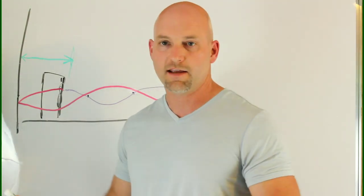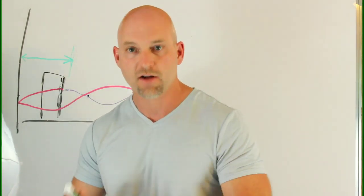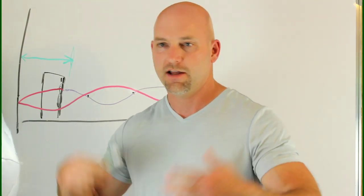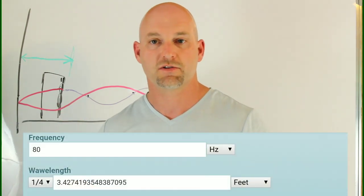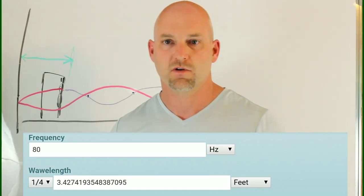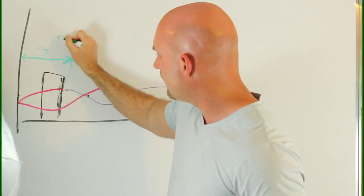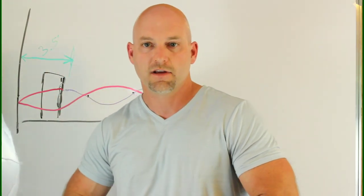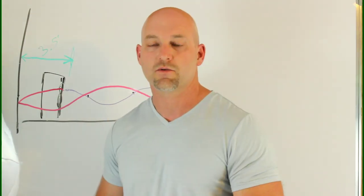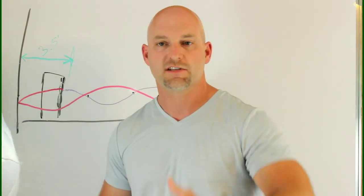Let's say the distance from the wall to the front of the baffle is three and a half feet. I know that off the top of my head because an 80 Hz cycle is 14 feet, and a quarter of that is three and a half feet. So if we are three and a half feet away from the wall, we're going to have a null at 80 Hz. Let's look at six-inch increments off of this wall and look at the different frequencies where we're going to have these SBIR issues.